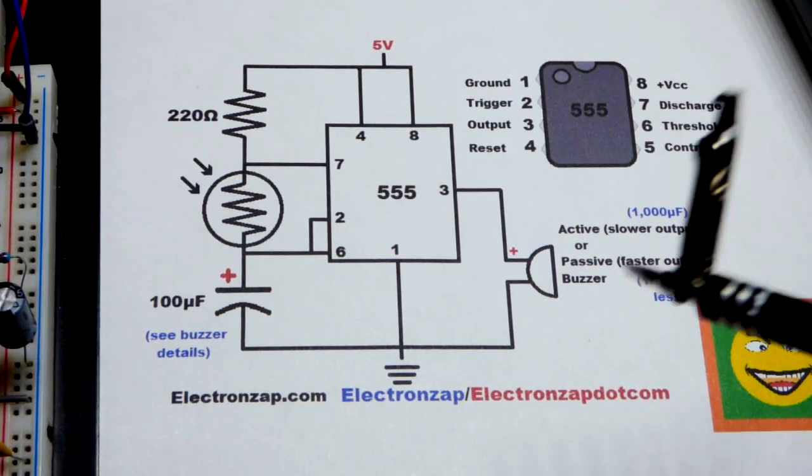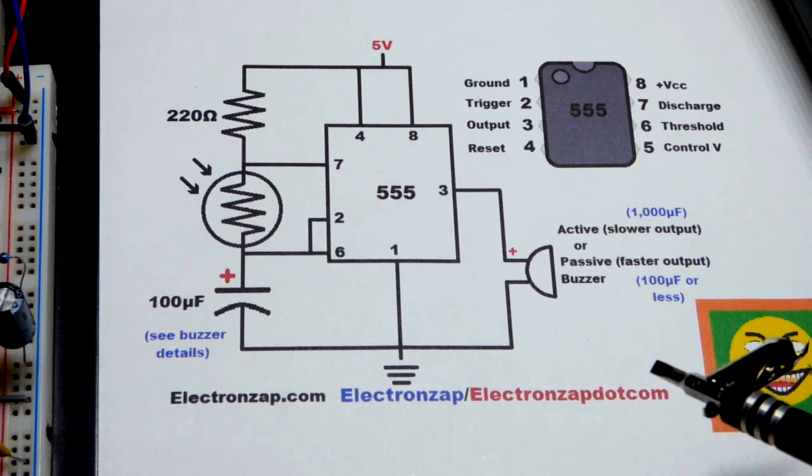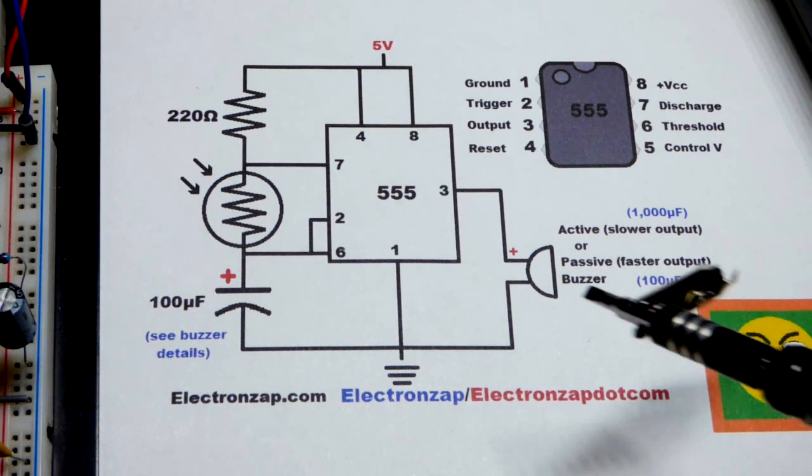So now in this video, we're going to use a 555 timer to get a buzzer buzzing or clicking.